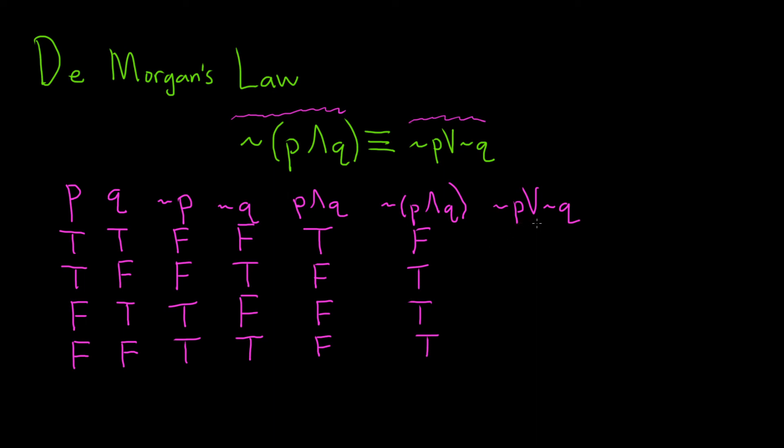And the last case, not p or not q. This will be true when at least one of these is true. So we look at the columns that contain not p and not q. And as long as one of them is true, it's true. So here they're both false, this will be false. Here we have true, true, and then we have some trues in the bottom. So these are all true.